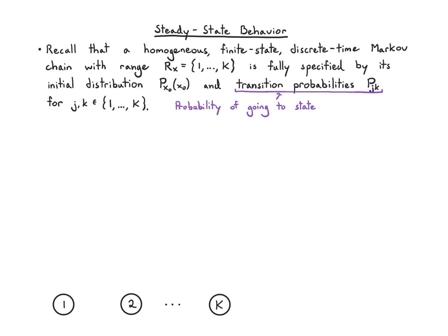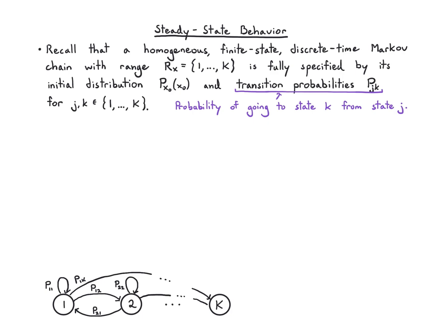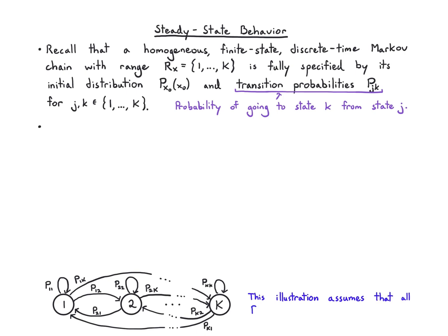We draw these transition probabilities using arcs. This is the probability of going to state k from state j, and we usually write the values using these arcs. Here I'm drawing the diagram as if every state is connected to every other state, including a self-loop, with all positive probabilities. If I had a zero probability, I would not draw an arc between j and k.